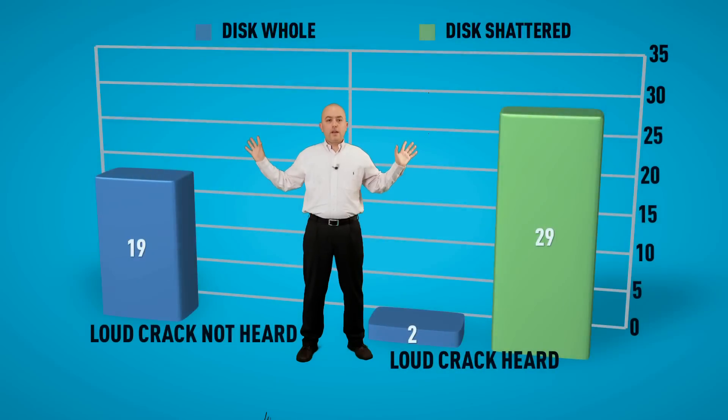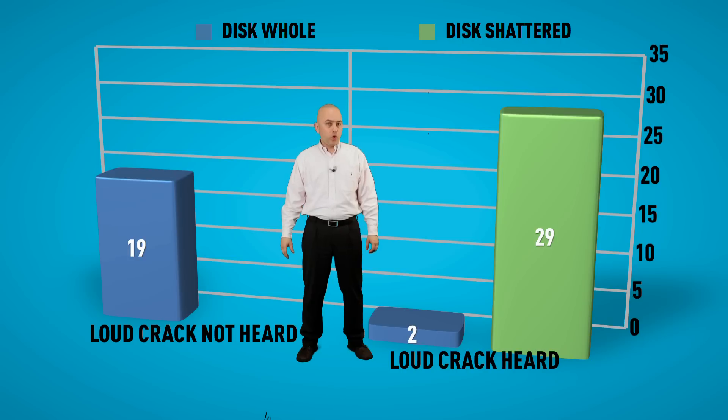Let's take a look at the data that she gathered. So here is the data that shows exactly what the philosopher saw and what she recorded. Over here, there was no loud crack. As you can see, out of 19 trials, the disc remained intact and it was never destroyed. Over here is when she heard the loud crack. On 29 trials where the loud crack occurred, the disc was shattered. And on two trials where the loud crack occurred, the disc did not shatter. As you can see, there is a very strong relationship between two variables. That is, hearing the sound and shattering.